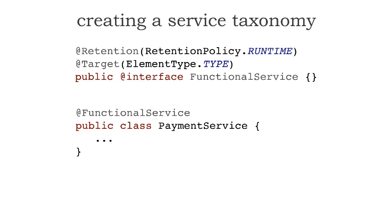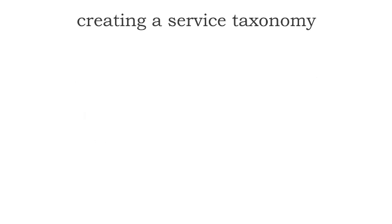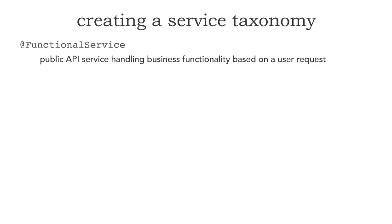I call these identity annotations because notice there's no data on the annotation itself — it simply identifies a class of service so that programmatically I know if I want a list of all functional services, I can programmatically access that information. Five of the most common basic ones I would encourage you to create: first, a functional service annotation. This is a public API service handling a public business request — the most basic and popular kind of microservice you'll have.